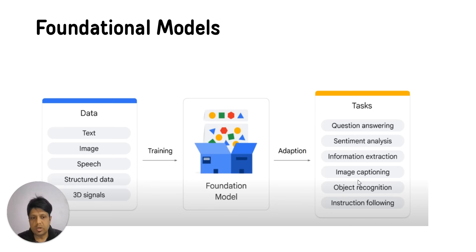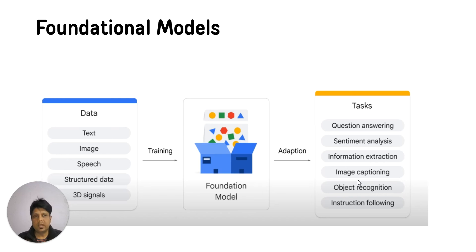Sentiment analysis is when you give a text to a model and it tells you whether the sentiment is positive or negative. Use cases include e-commerce portals like Amazon wanting to understand whether a review is positive or negative, political parties wanting to understand whether people are tweeting positively or negatively about their campaign, or brands wanting to understand how people are posting about their products.